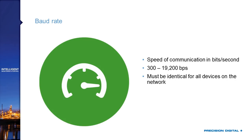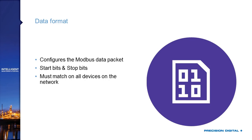Data format tells devices what form data is arriving in — for example, how many start bits and stop bits are used, and whether the data is an integer, long, or floating point. So long as all your devices are properly matched on data format, you don't need a deep understanding of it. If a device says it has one stop bit, make sure all your other devices are programmed with one stop bit. As long as you match all data format values, the system will operate just fine.